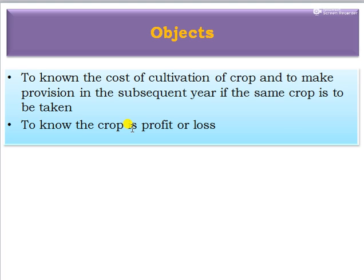The first objective of this exercise is to know the cost of cultivation of a crop and to make provision in the subsequent year if the same crop is taken. The second objective is to know whether the crop is profit or loss.